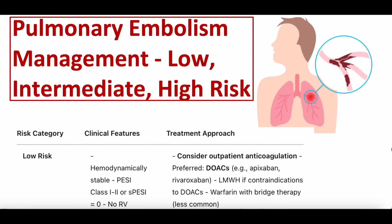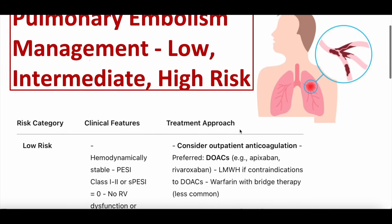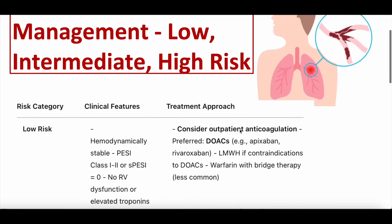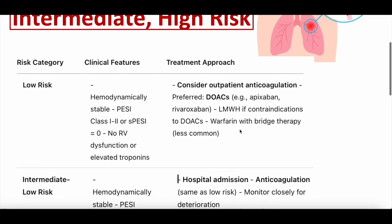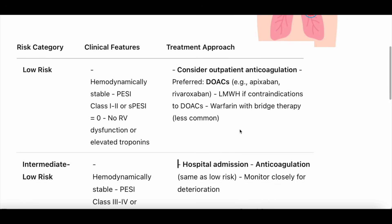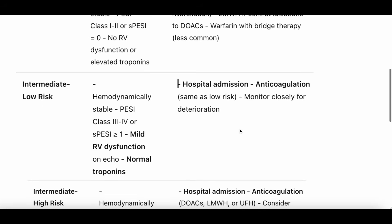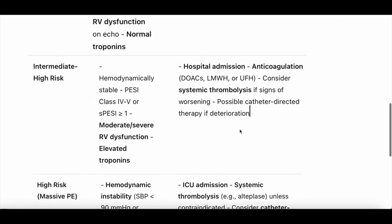Hey everybody and welcome back to another video here at Whiteboard Medicine. Today we're going to be talking about some more advanced management strategies for pulmonary embolism, or blood clot in the lung, particularly when we risk stratify patients into low, intermediate, and high risk, also known as submassive and massive, and what that means for treatment possibilities.